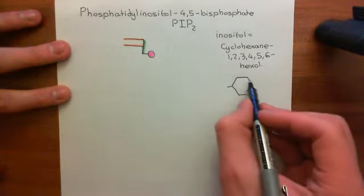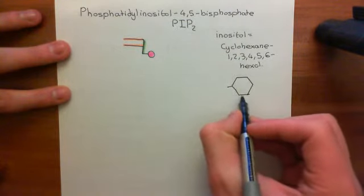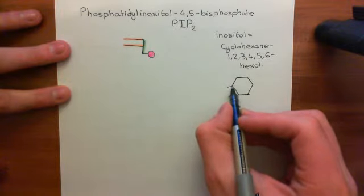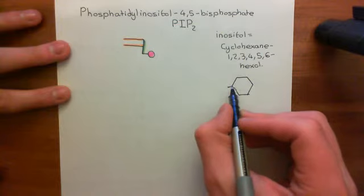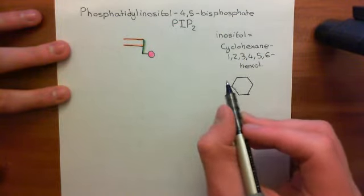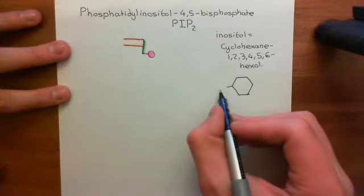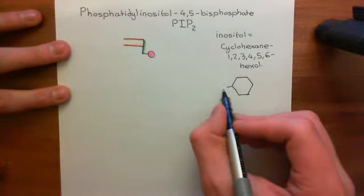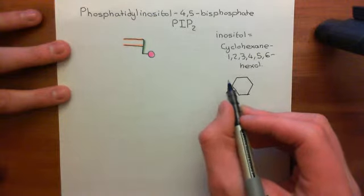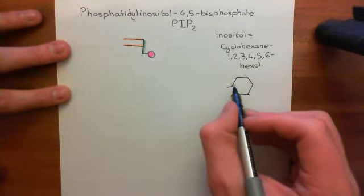However, it's not as simple as it might seem. Every carbon in this ring is going to have both an alcohol group and a hydrogen group coming off it. If you imagine this six-membered carbon ring sitting perfectly within the plane of the paper, then one group will be coming out of the page towards us, whilst the other will be going into the page away from us.